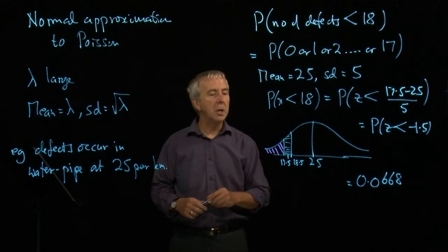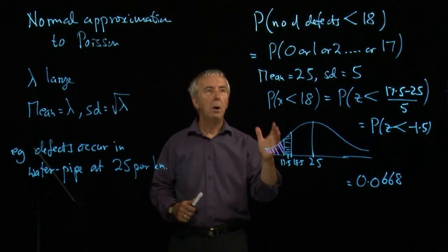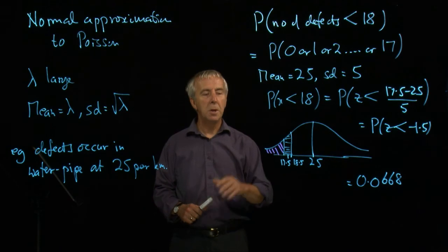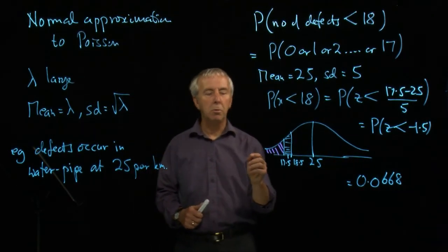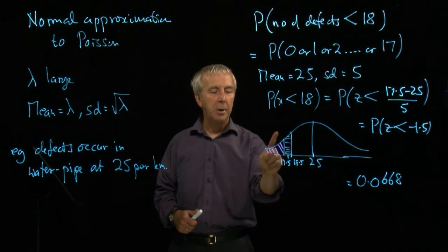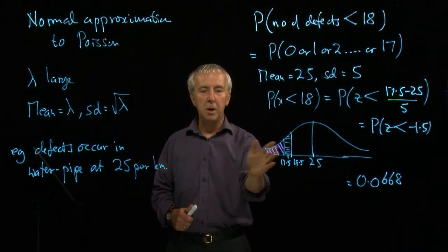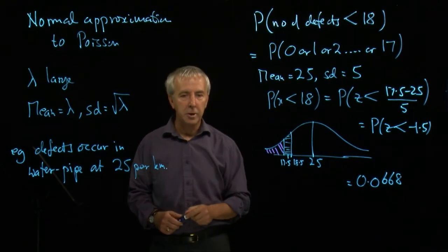So that's the probability of getting less than 18 defects when the average is 25. And so we can see that the normal distribution has enabled us to add up 17 plus 16 plus 15, etc. all the way down to 0.